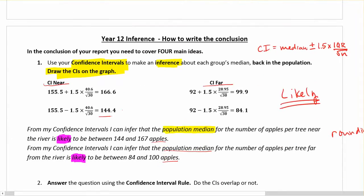Does the bottom of one of them, so in this case the lowest point on near the river, is that bigger or smaller than the highest point on far from river? If you had confidence intervals that were close and it was hard to read it off the graph, come back and look at your numbers and they can tell you exactly where those boundaries are and if they overlap. Here I can see that the lowest for near the river is 144 and the highest for far from river is 100. That's like a 44 apple difference. Clearly they don't overlap.